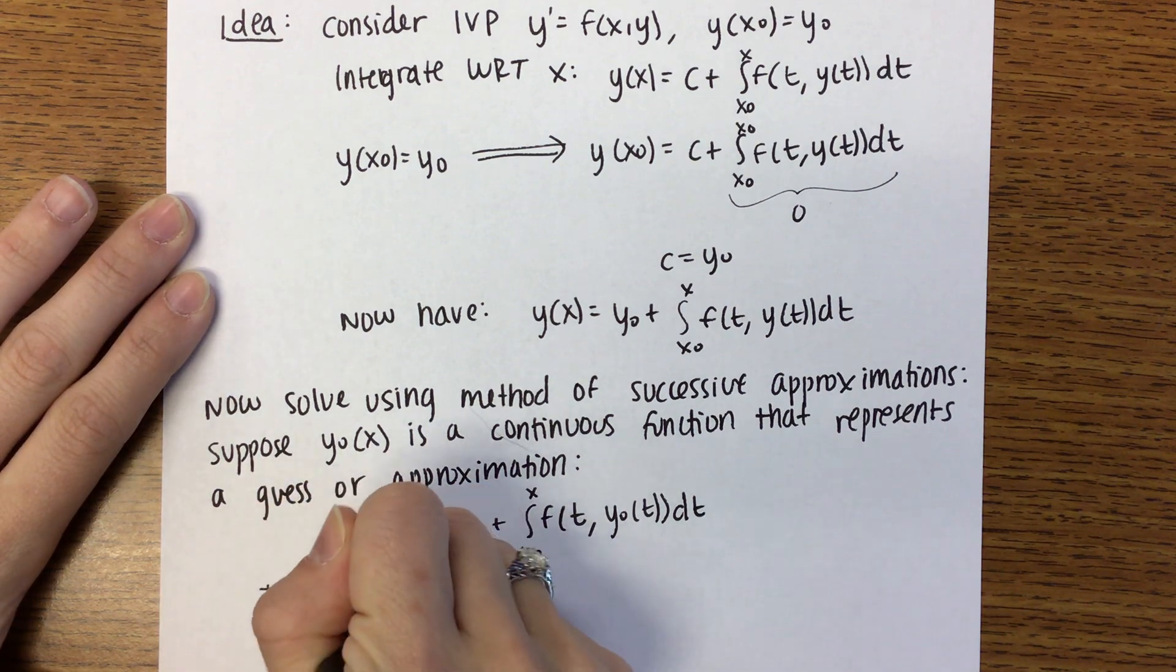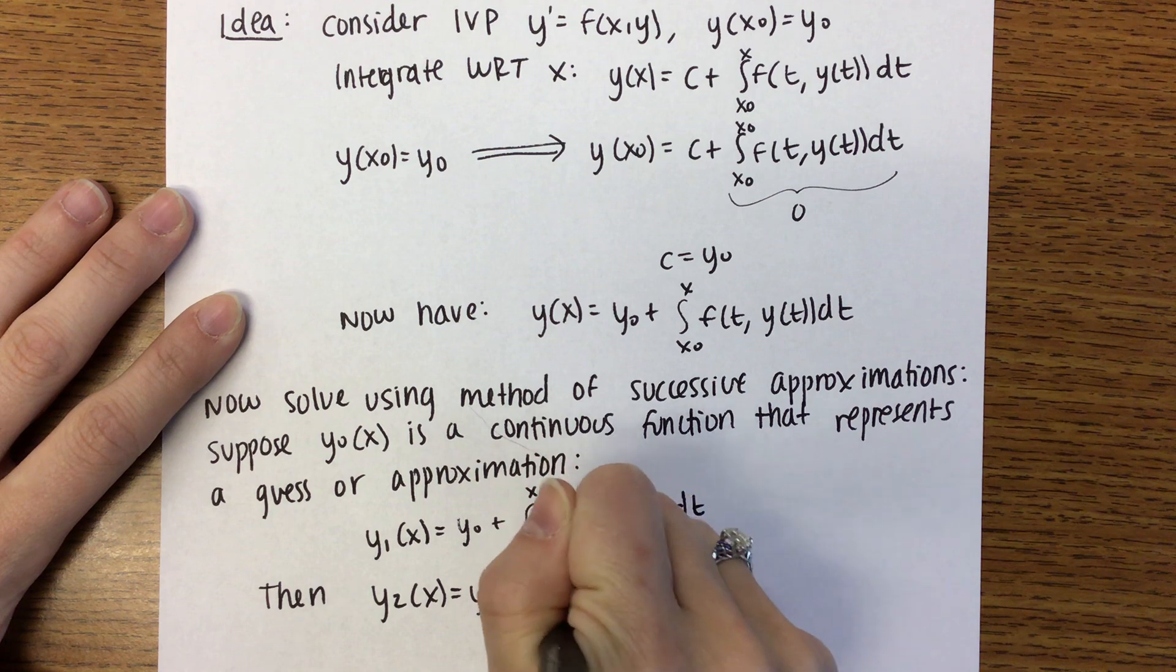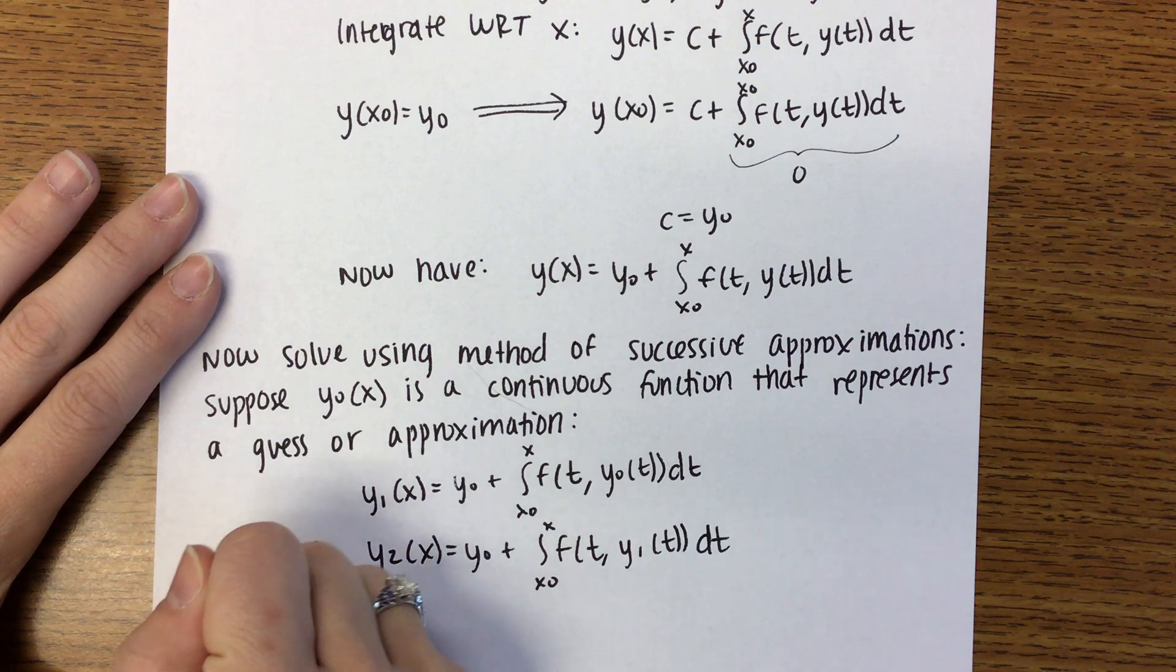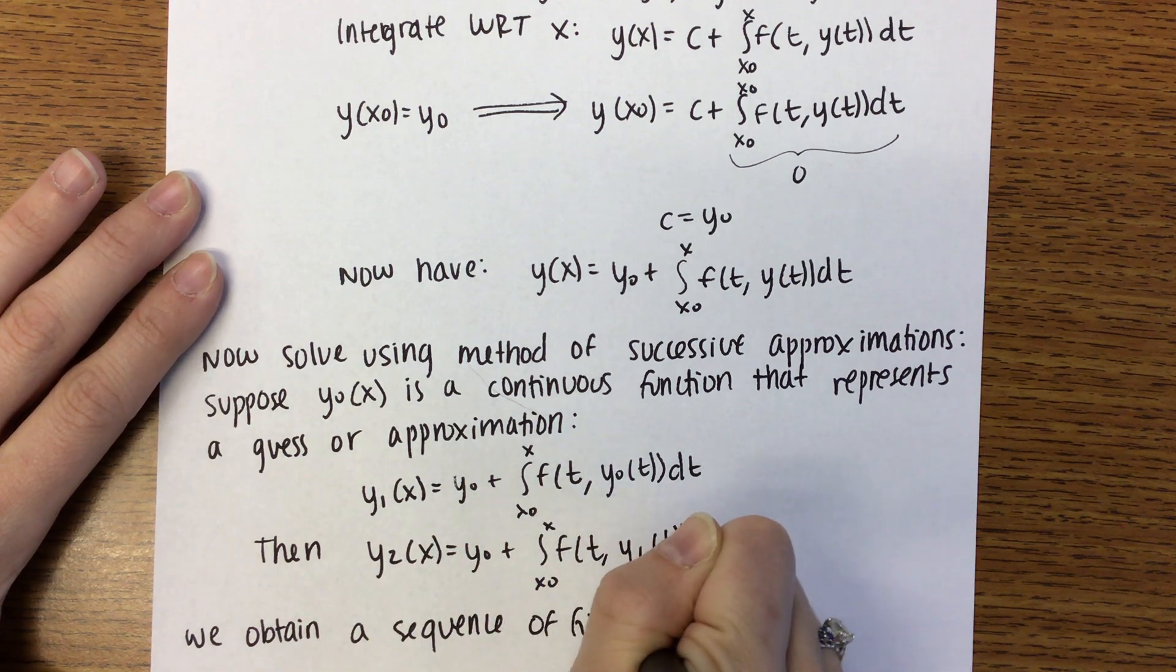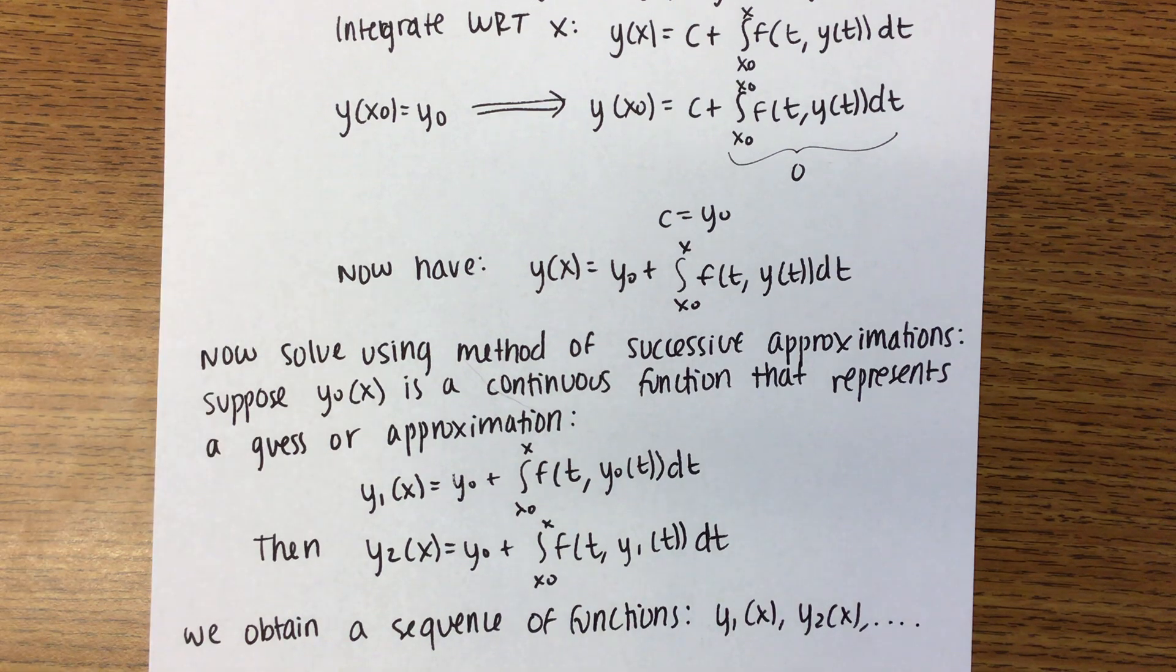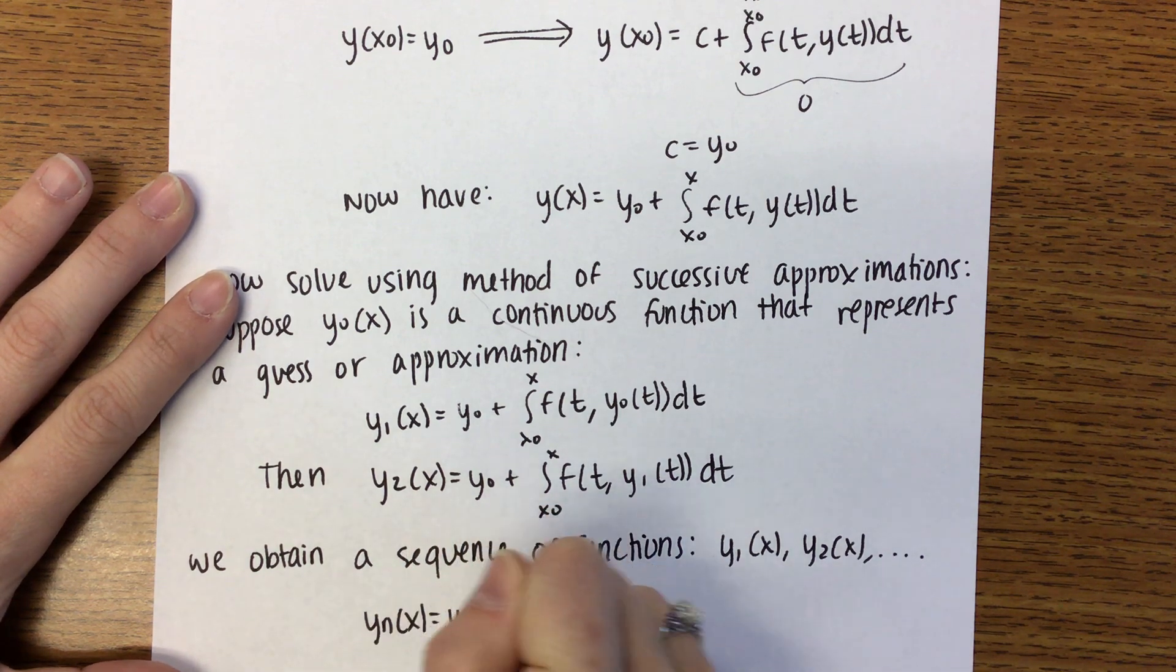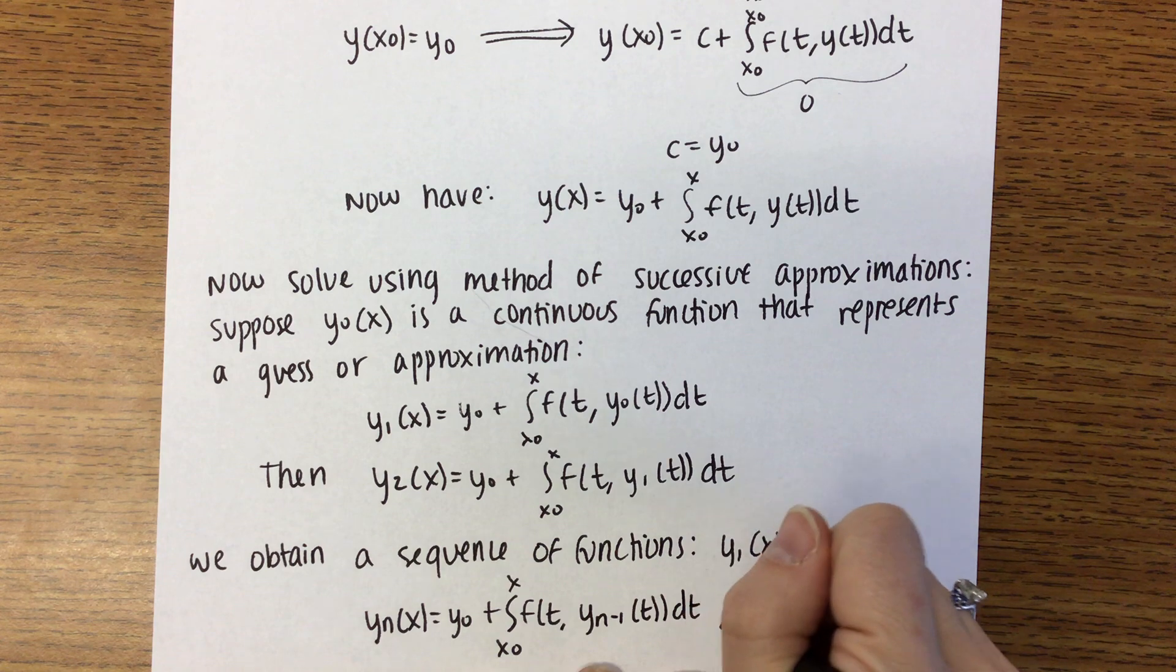Then what you'll do? Then you'll calculate your Y2 of X. That'll still be Y0 plus the integral from X0 to X. This time it's F of T, Y1 of T, DT. And then you'll keep going. So what we do is we obtain a sequence of functions.